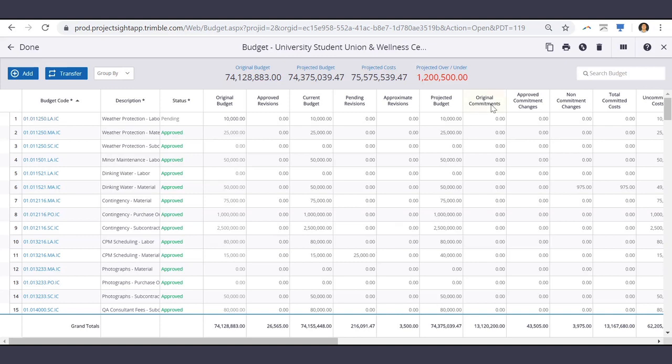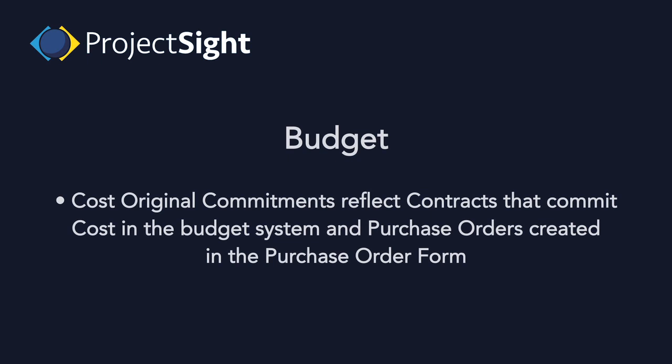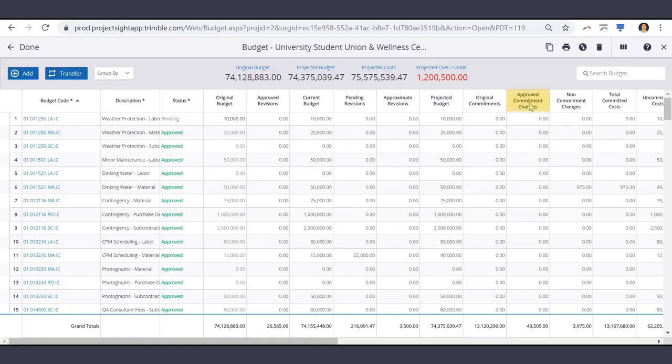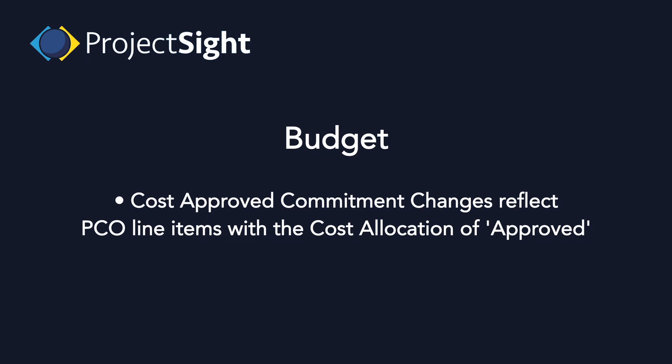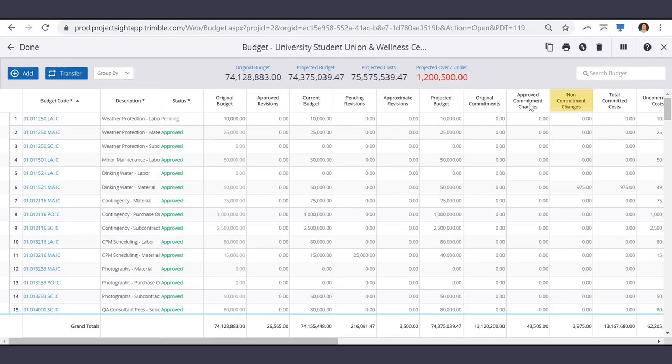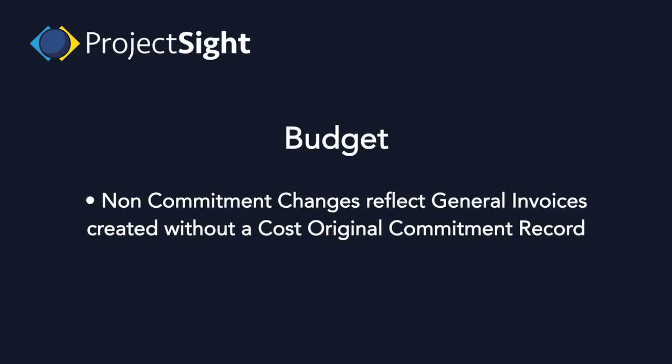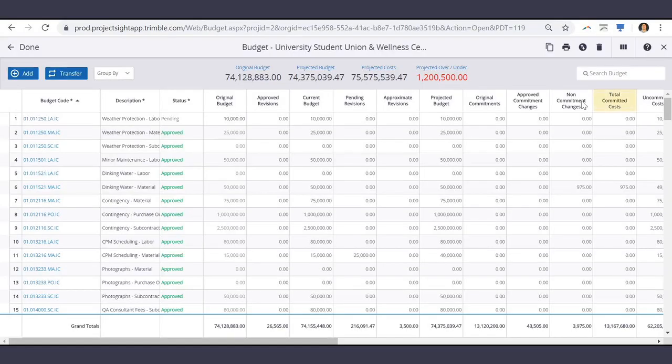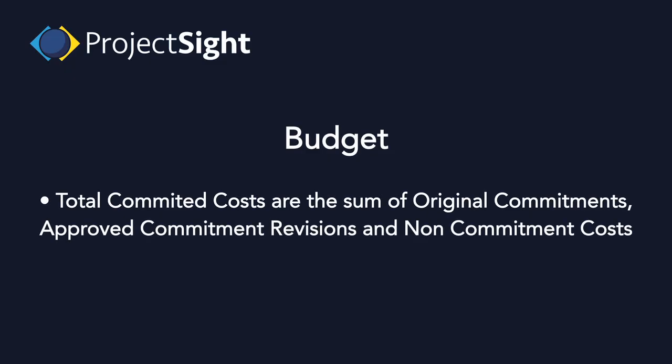Now onto the cost columns. Cost original commitments reflect contracts that commit costs in the budget system and purchase orders created in the purchase order form. Cost approved commitment revisions reflect PCO line items with the cost allocation of approved. Non-commitment costs reflect general invoices created without a cost original commitment record. Total committed costs are the sum of original commitments, approved commitment revisions, and non-commitment costs.